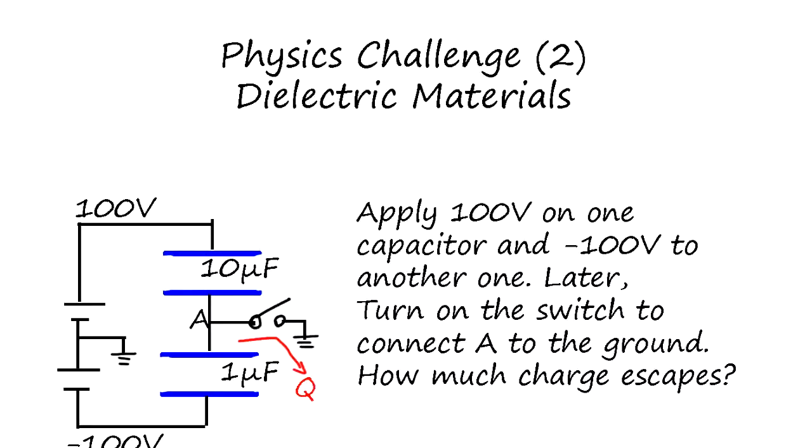Physics challenge 2: dielectric materials. We apply 100 volts and negative 100 volts across these two capacitors. It's a series capacitor configuration. We apply the voltage and then short circuit in the middle, which means suddenly it's going to be a parallel configuration, but a little different from parallel because this one's negative, so the voltage gets parallel too.